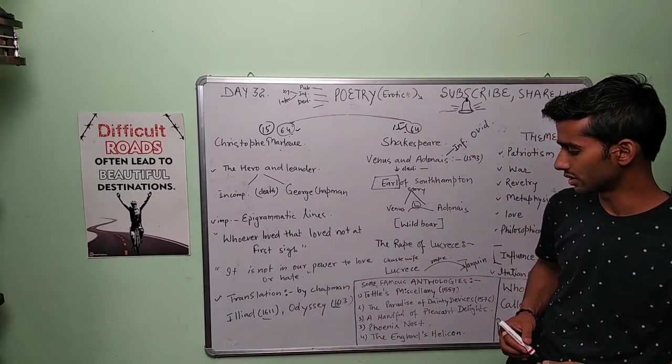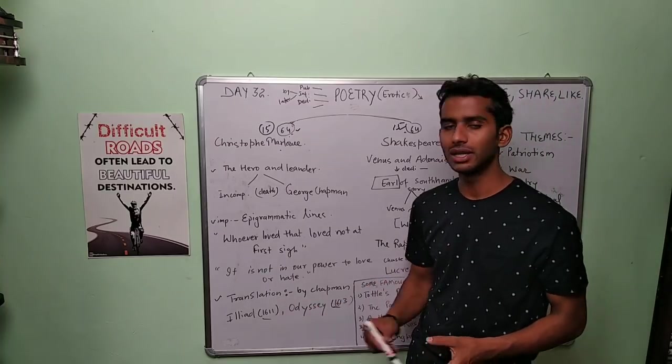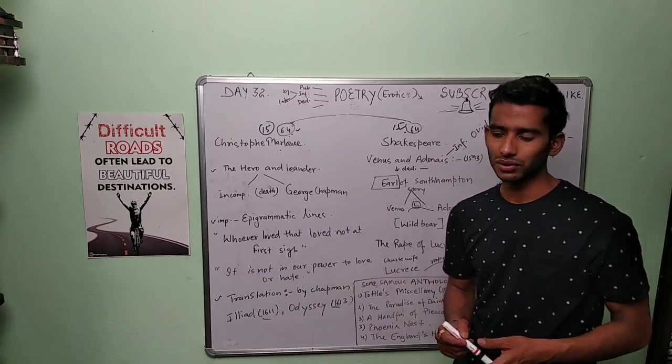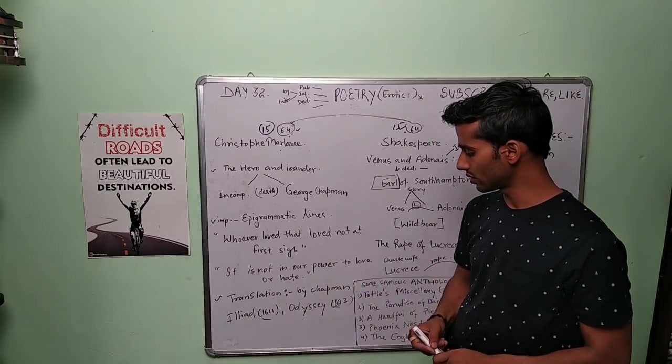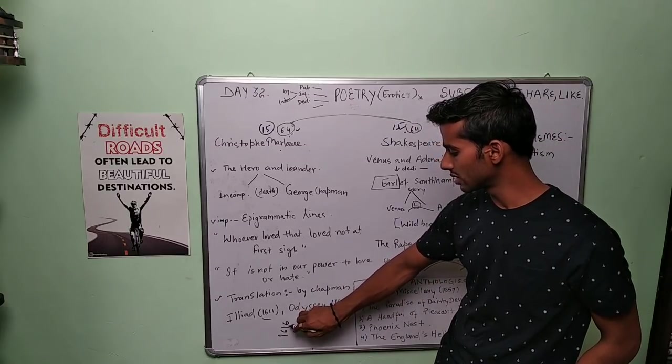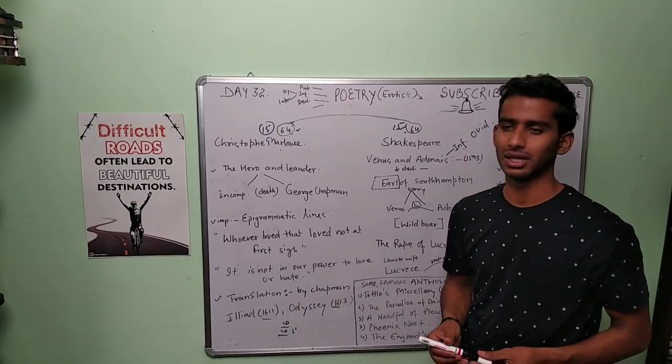1613 and 1611—these are not dates of publication of these works, but these are translation dates: 1613 and 1611. So do you remember, 1616? If you remember this, 1616—Shakespeare dies in that year.